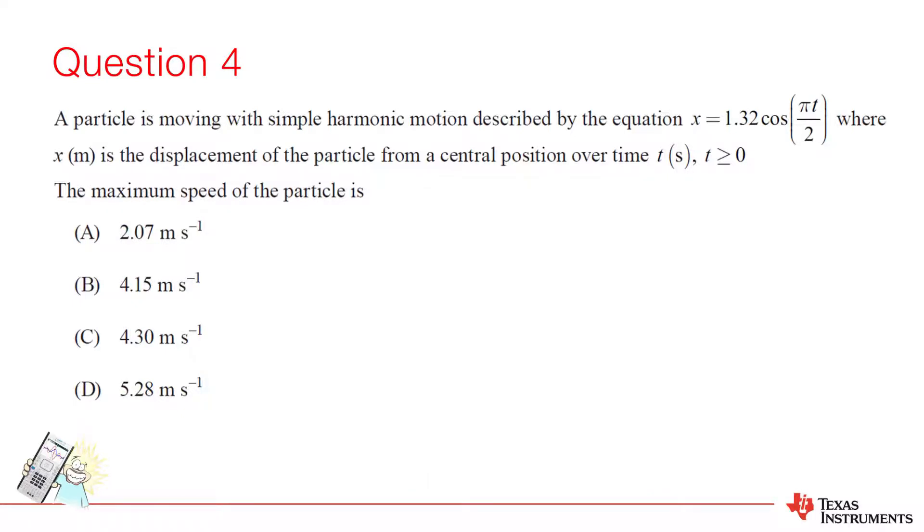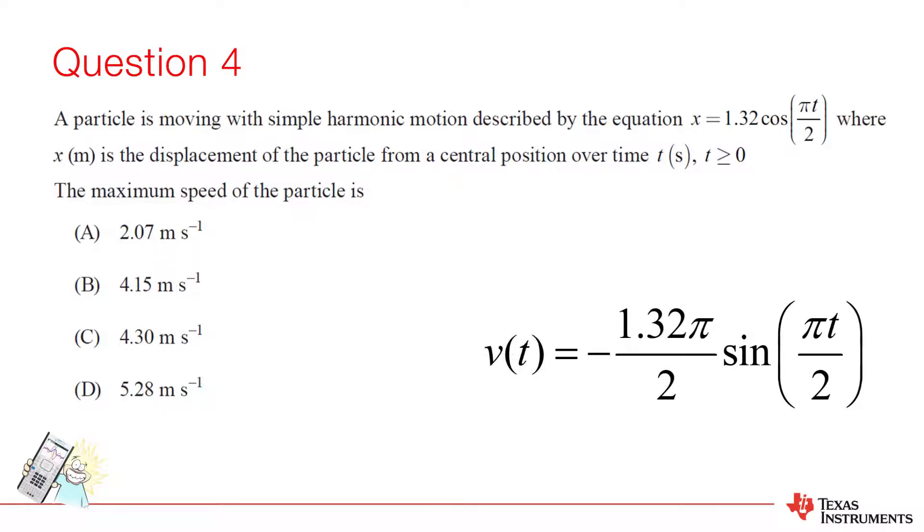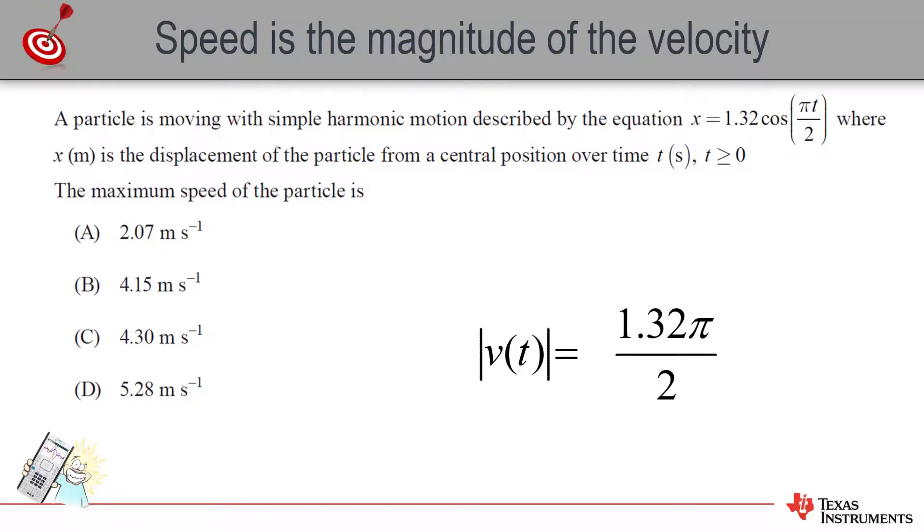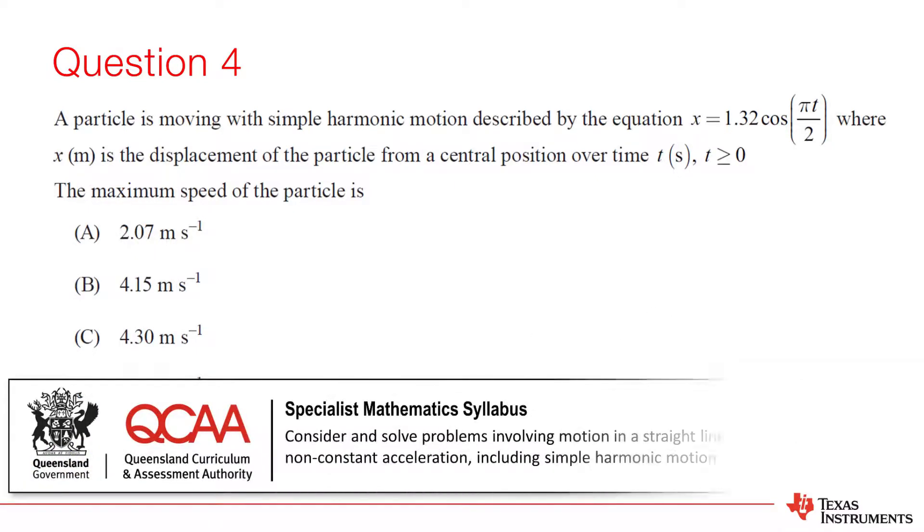This question is also a lovely example of how by-hand calculations may be quicker. Differentiating our position function yields 1.32 π over 2 times sine of π t over 2. That's our velocity equation. We know that the maximum value of sine π t over 2 is 1. As we are not concerned about when the maximum speed occurs, our answer for the maximum speed is simply 1.32 π over 2, which of course is still equal to option A.